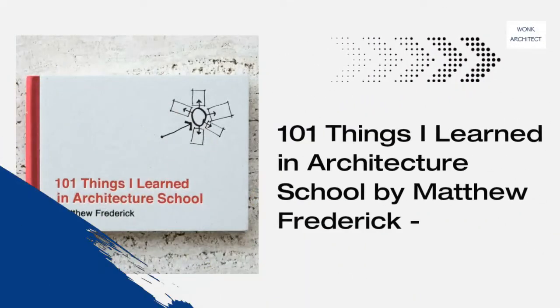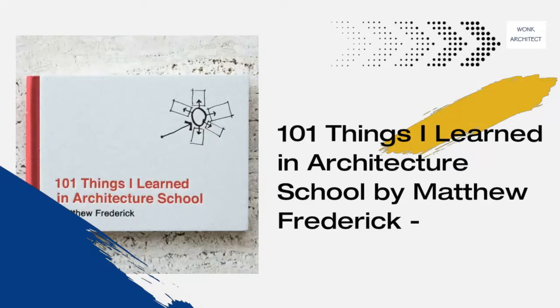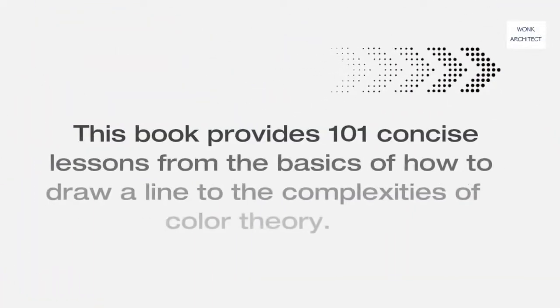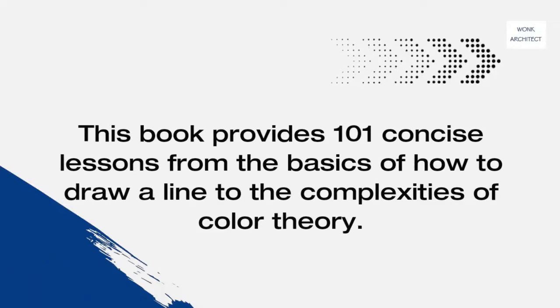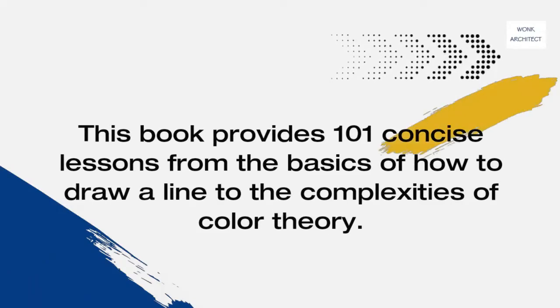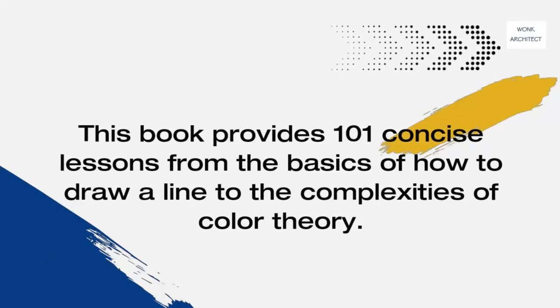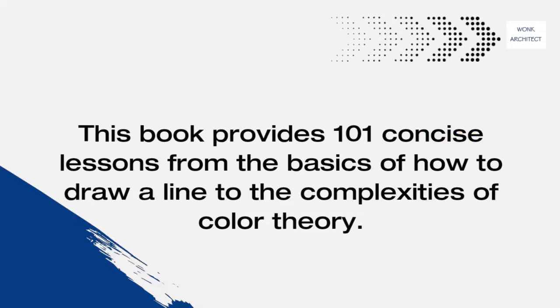101 Things I Learned in Architecture School by Matthew Frederick. This book provides 101 concise lessons from the basics of how to draw a line to the complexities of color theory.